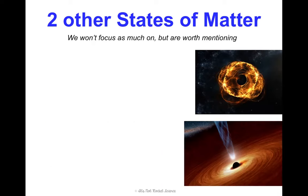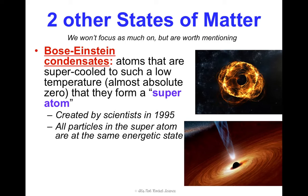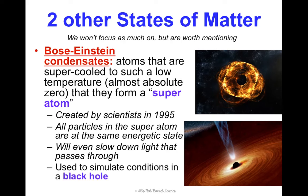This other one is super interesting because it's only been discovered in the last 20 years or so — Bose-Einstein condensates. This is when atoms are super cooled to such a low temperature, almost reaching absolute zero, that they form something called a super atom. Scientists actually created these condensates in 1995. All particles in this super atom are at the same energetic state, and they can actually slow down light that passes through them. These condensates are used to simulate the conditions inside a black hole, which helps us understand more about what black holes are.